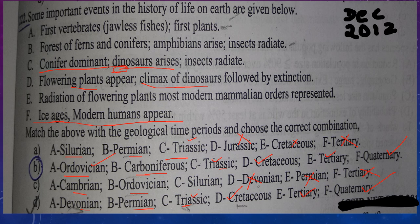Now we are confused between options B and D. Let's go back to statement A. First vertebrates and first plants — in option B it is given Ordovician, and in option D it is given Devonian. We know that Devonian is the age of fishes and first amphibians appear. That means fish were already dominant, so first fish formed in the period before that. So we can confirm that option D is incorrect — A is not Devonian. So we can blindly say that option B is correct.